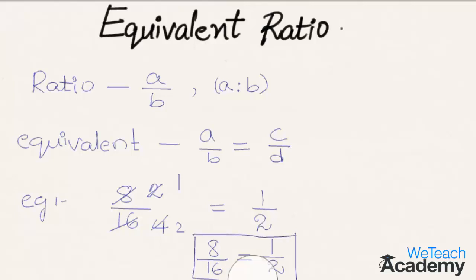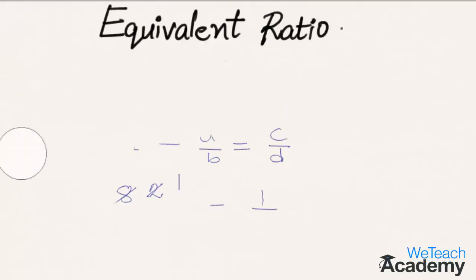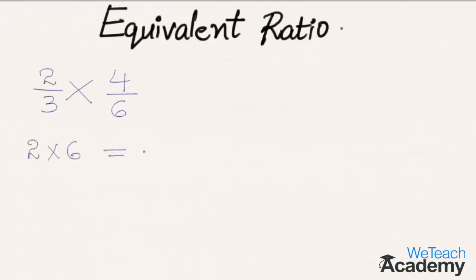We can also write equivalent ratios by just cross multiplying both the ratios. Coming to the next example, that is 2 by 3 and 4 by 6. Now let us cross multiply it and we get 2 into 6 on the left hand side which is equal to 3 into 4 in the right hand side, and we get here 12 in the left hand side which is equal to 12 in the right hand side. So here we can say that 2 by 3 is equivalent ratio of 4 by 6.